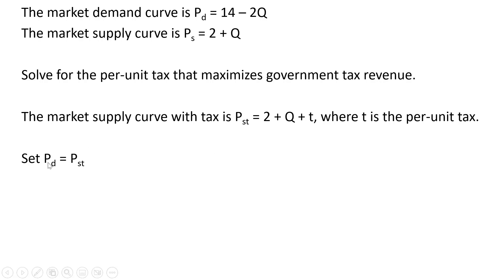Now we're going to set the market demand curve equal to the market supply curve equation, making our substitutions. Now solving for Q: 14 minus 2 is 12. We add 2Q to both sides, that's where the 3Q is coming from. Now let's subtract the tax from both sides and divide through by 3. 12 divided by 3 is 4, and then minus t divided by 3 is what we're left with.